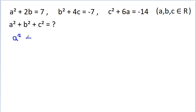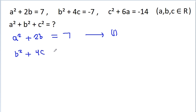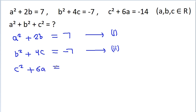We have a squared plus 2b is equal to 7 — suppose this is equation 1. And b squared plus 4c is equal to minus 7 — suppose this is equation 2. And c squared plus 6a is equal to minus 14 — suppose this is equation 3.